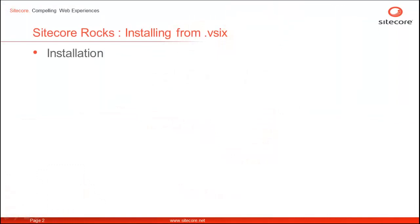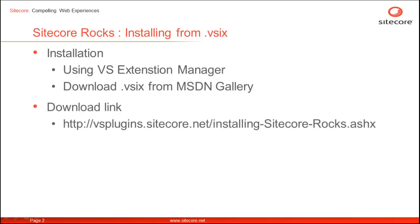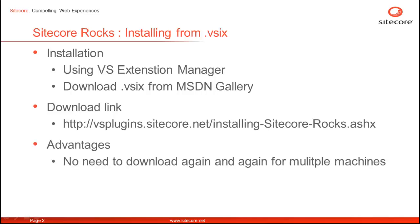Sitecore Rocks can be installed as a plugin using Visual Studio Extension Manager, or we can download the plugin from MSDN Gallery. You can search the Sitecore Rocks extension on MSDN, or follow the Sitecore Rocks Visual Studio plugin page leading to the plugin download. This approach may be useful if you have to install it on multiple machines. You may also freeze the plugin as project artifacts if you wish.